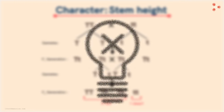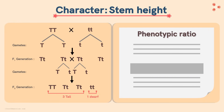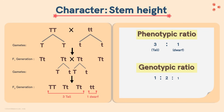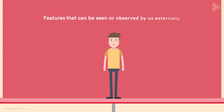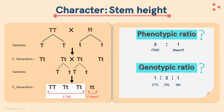Now that we have a good idea about crossing, let me introduce two new terms: Phenotypic Ratio and Genotypic Ratio. In this case, the Phenotypic Ratio is 3 to 1 — that is, 3 tall plants and 1 dwarf plant. The Genotypic Ratio is 1 to 2 to 1. The features that can be seen or observed externally are called Phenotypes — pheno is a prefix indicating an observable characteristic. We could clearly see 3 are tall and 1 is a dwarf plant, hence the Phenotypic Ratio is 3 to 1.